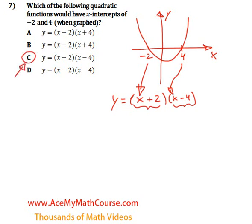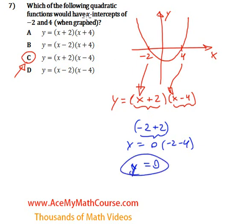Note of course that if we were to plug in the negative 2 for x, we would have negative 2 plus 2, which is 0, times negative 2 minus 4, which is negative 6. Negative 6 times 0 is 0. So y would be 0, and remember that when y is 0, we have an x-intercept. So that must be correct then.